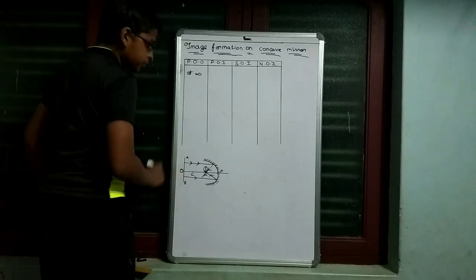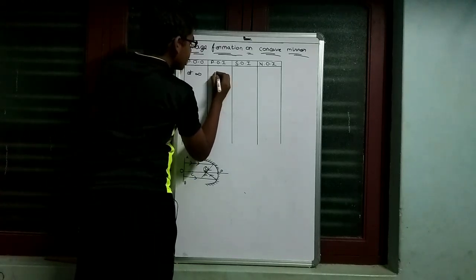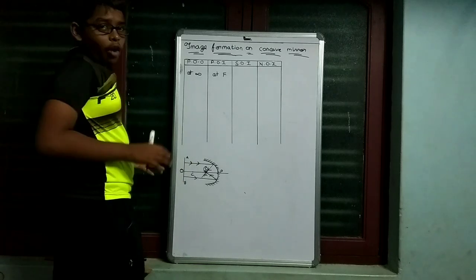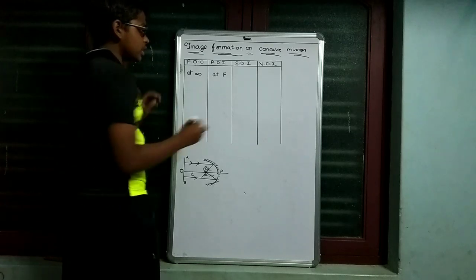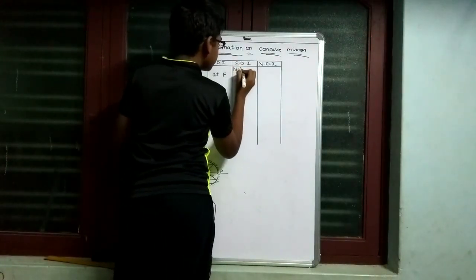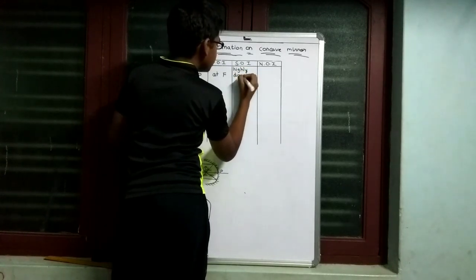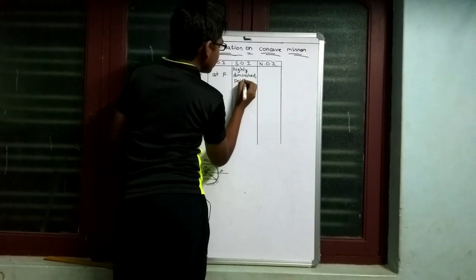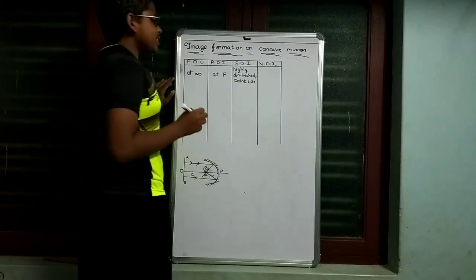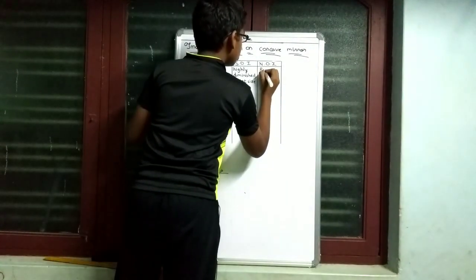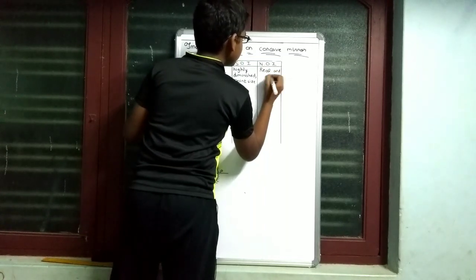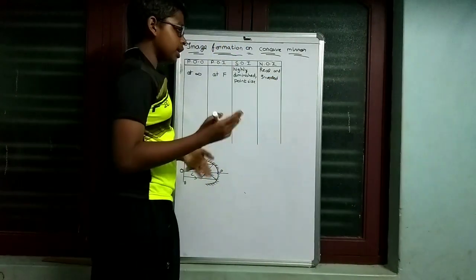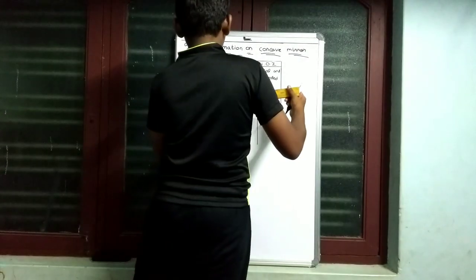So when the object is at infinity, the image forms at the principal focus F. The size of the image is highly diminished — point size. The nature of the image is real and inverted. This completes the first ray diagram.